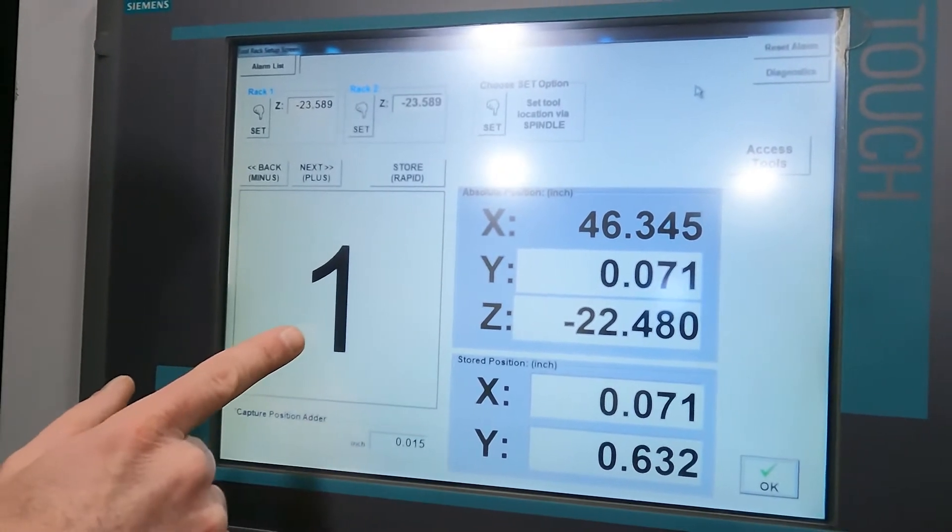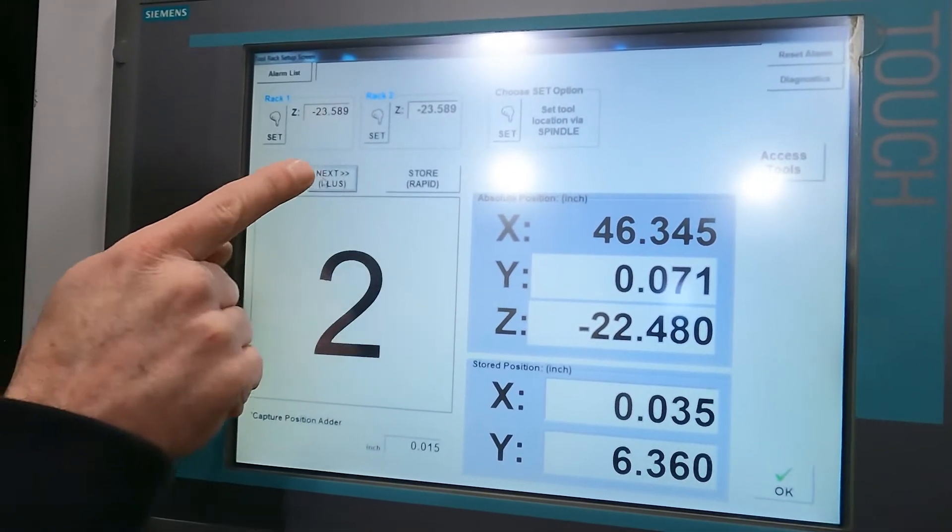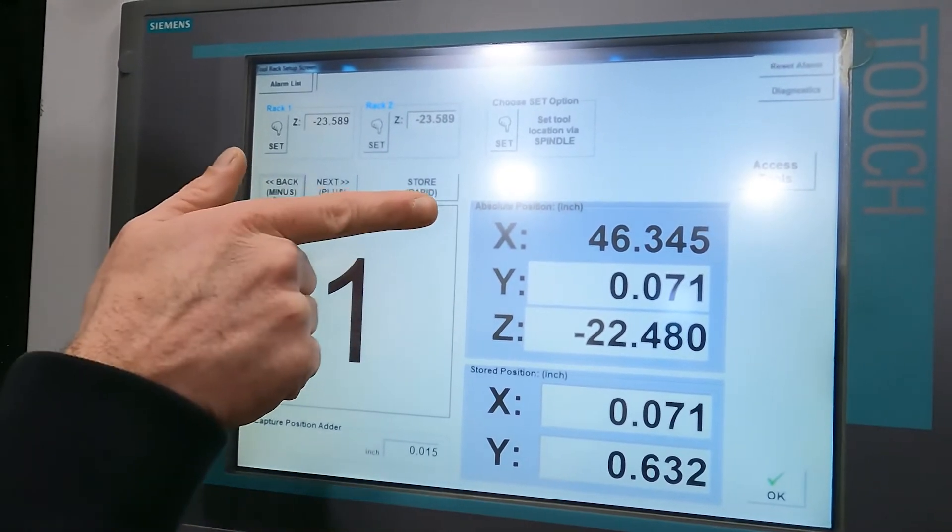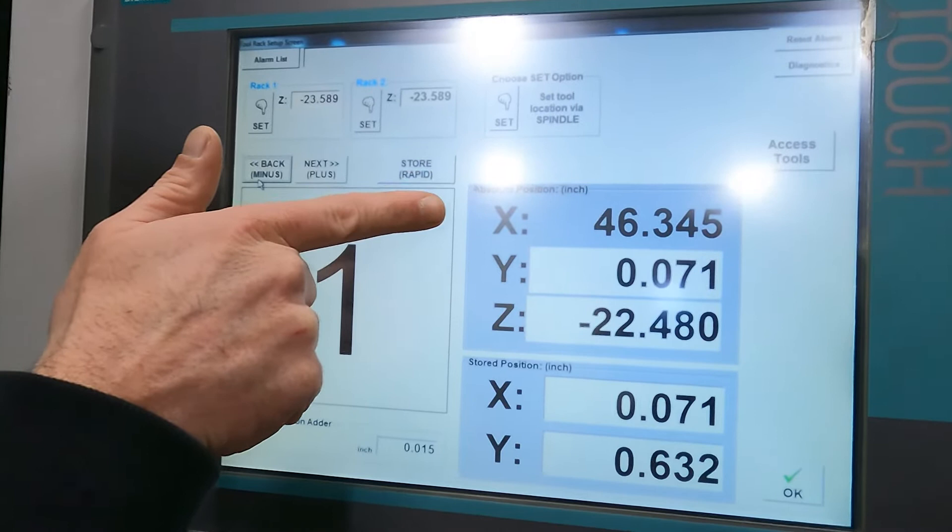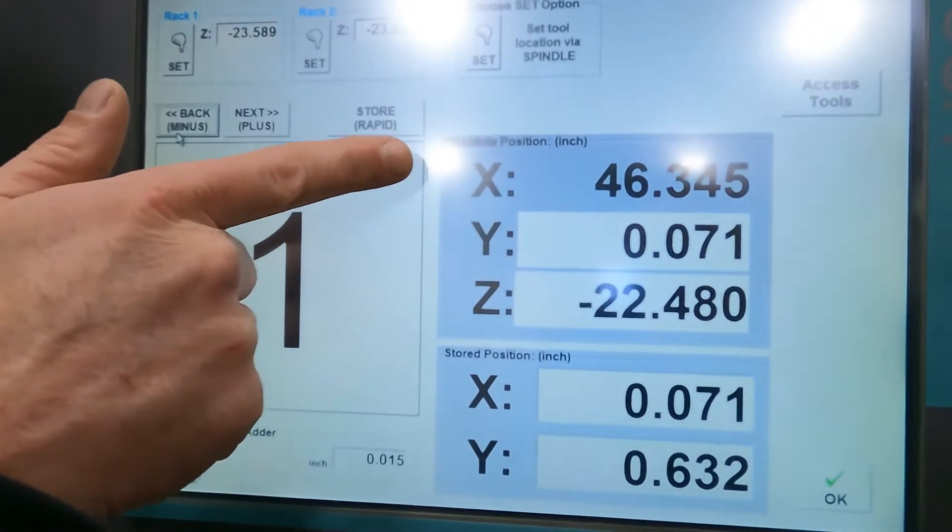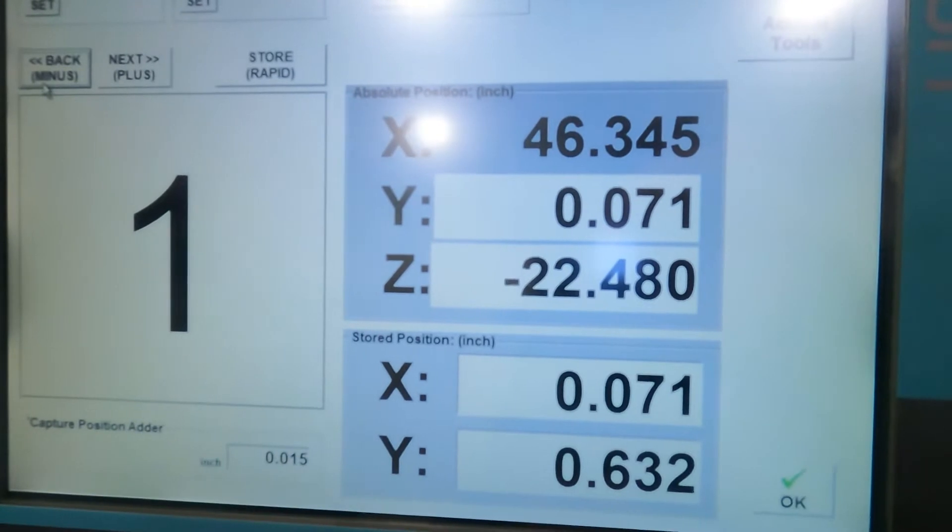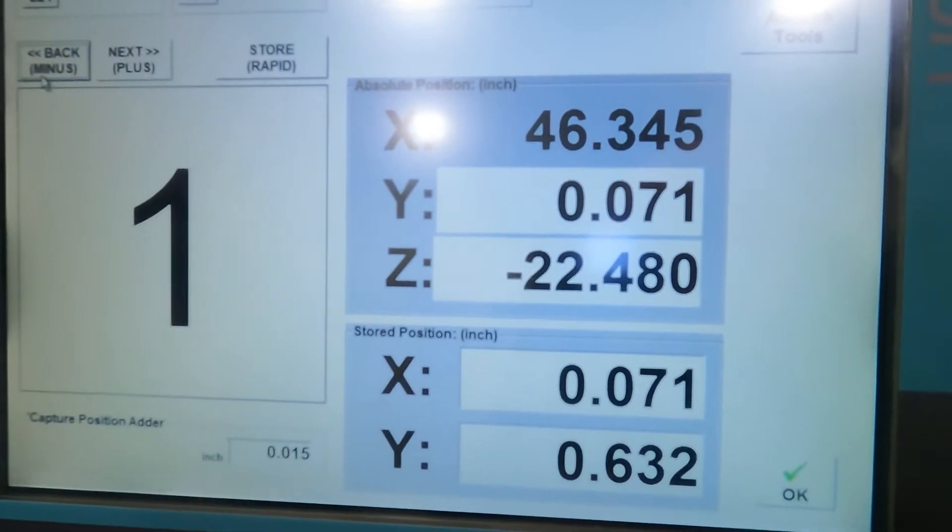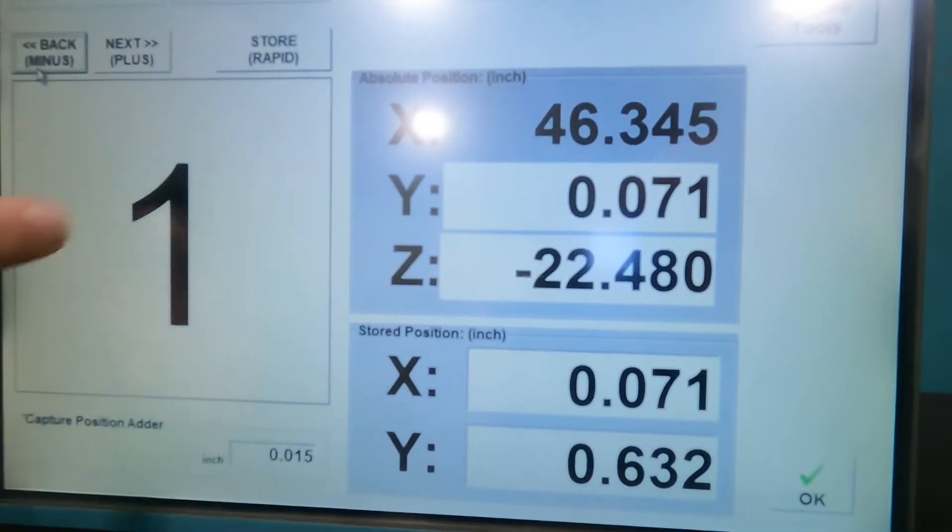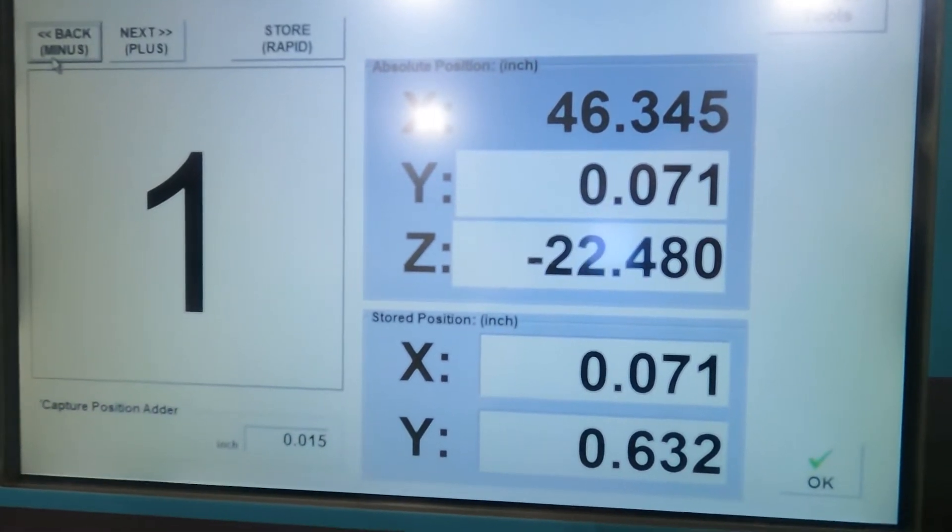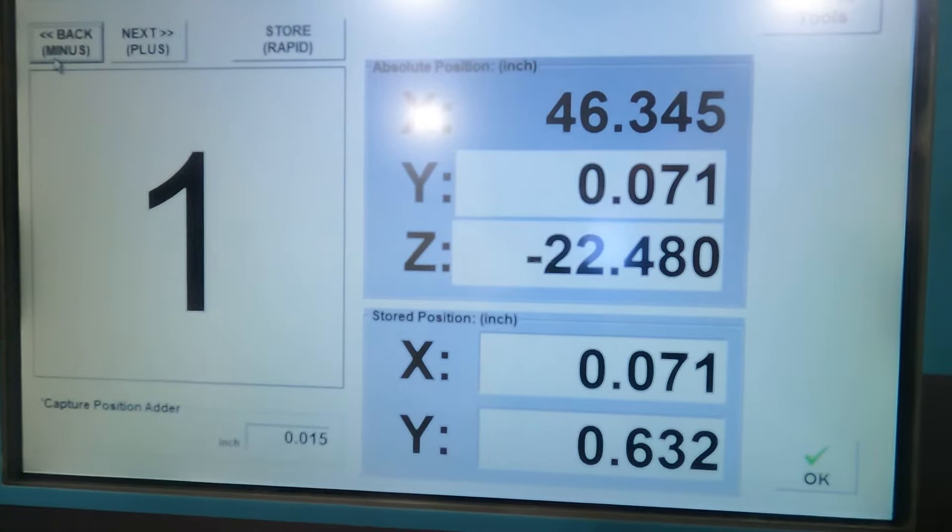I can see I'm on position one. If I wanted to, I can move to whatever position I need to. Over here, you can see the absolute position. That's the position your machine is in right now. And over here, you can see the stored position of the pocket location. I'm going to start by lining up my Y axis. If your Tool Rack is in the back of the machine, you would want to start lining up your X axis.